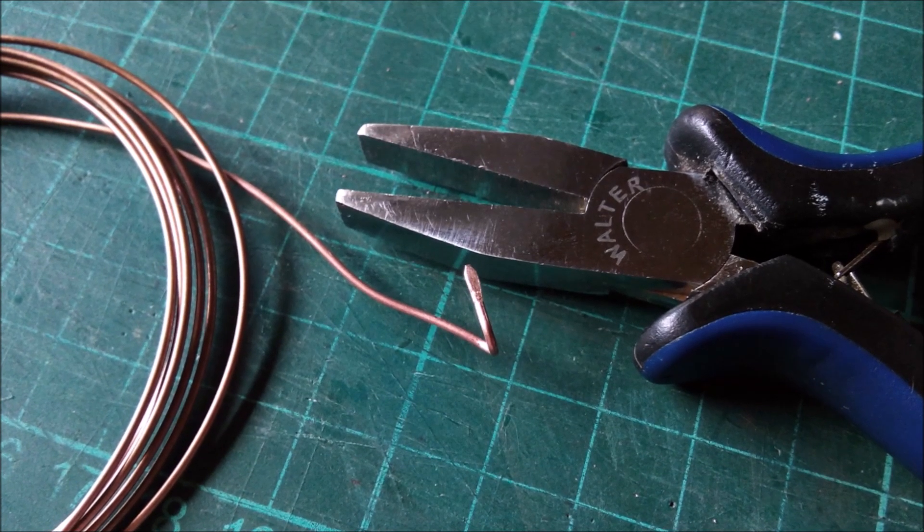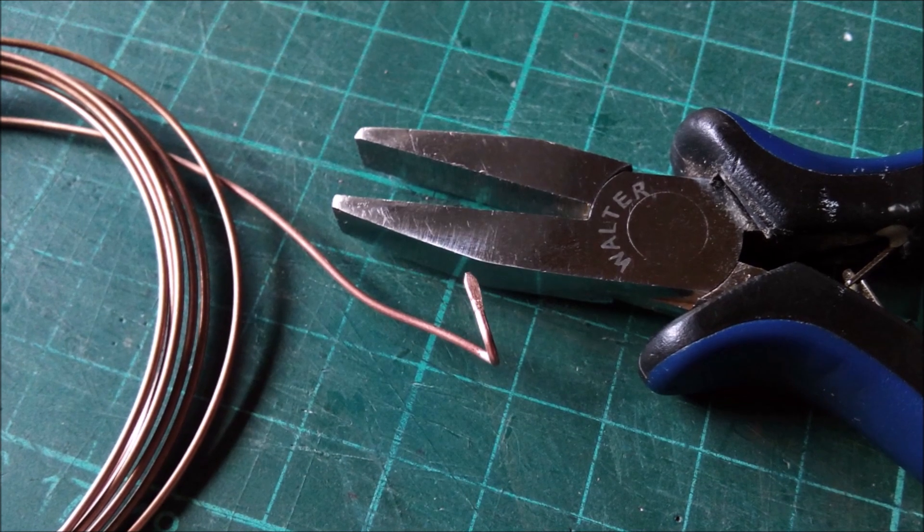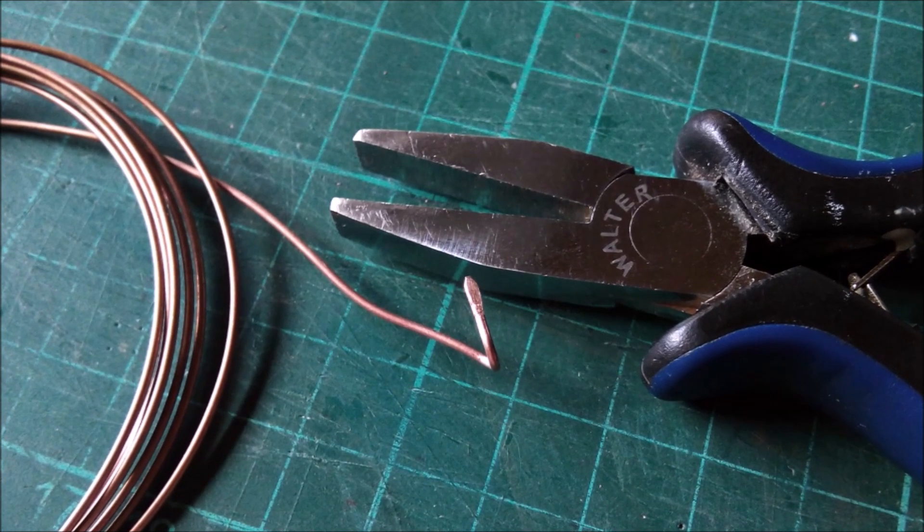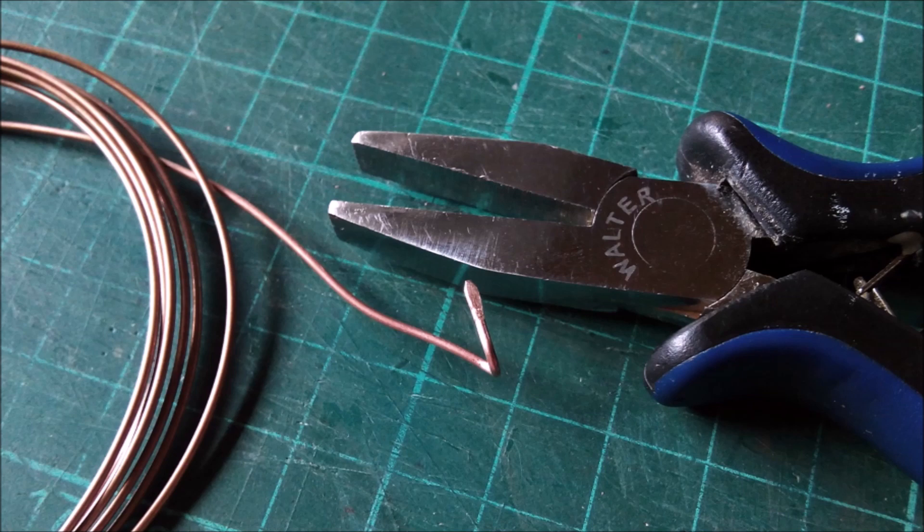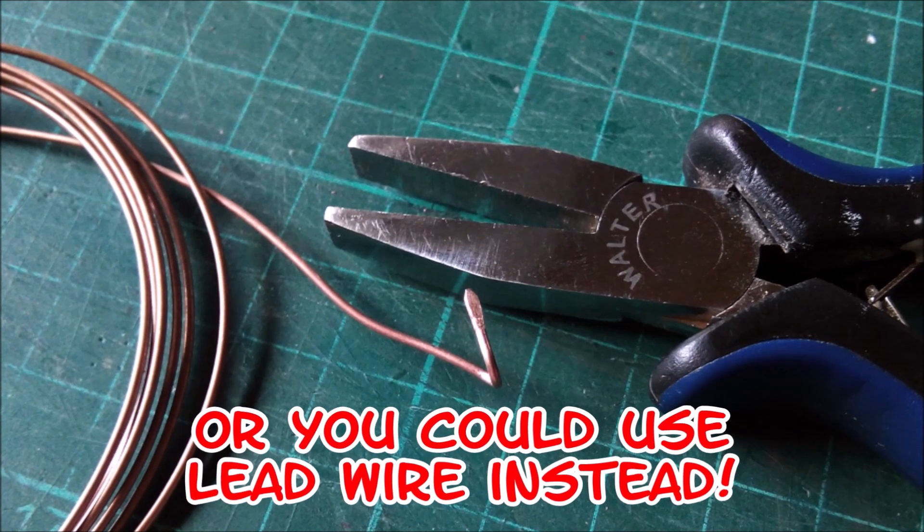Usually I use the heat of a candle flame to soften the copper, but in this case I didn't. For me it's very difficult to control the force that has to be applied if the wire is too soft. If you can do it better than me, I recommend the candle because I had to use all the force I've got.